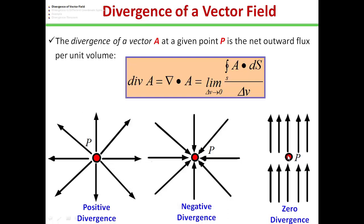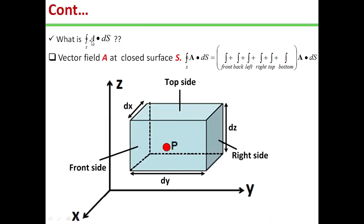In some cases, the inward electric field lines will be equal to the outward electric field lines. In that case, if we calculate the total flux, that will be zero, so the divergence will also be zero. For more clarification of what the closed surface integral A·dS means, I have taken one example. A cuboid is placed in the Cartesian coordinate system, where dx, dy, and dz are the differential lengths along x, y, and z directions. For this cuboid, we will calculate the total outward flux through the closed surface. The cuboid has six faces: front, back, left, right, top, and bottom. For all six faces, we will calculate A·dS over the closed surface. After calculating A·dS for each surface and summing all components, we will find the total flux from the closed surface S.